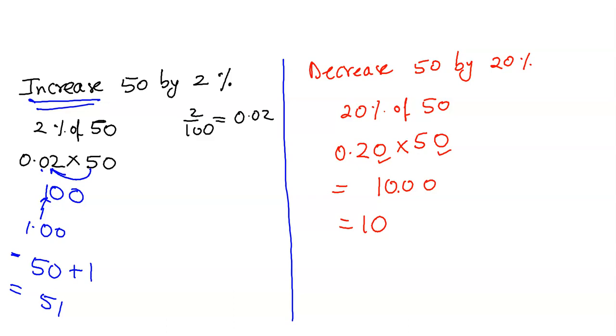Now, decrease is giving us a feeling that it is going to be reduced. So from our original number 50, you take away 10. 50 take away 10 is 40.